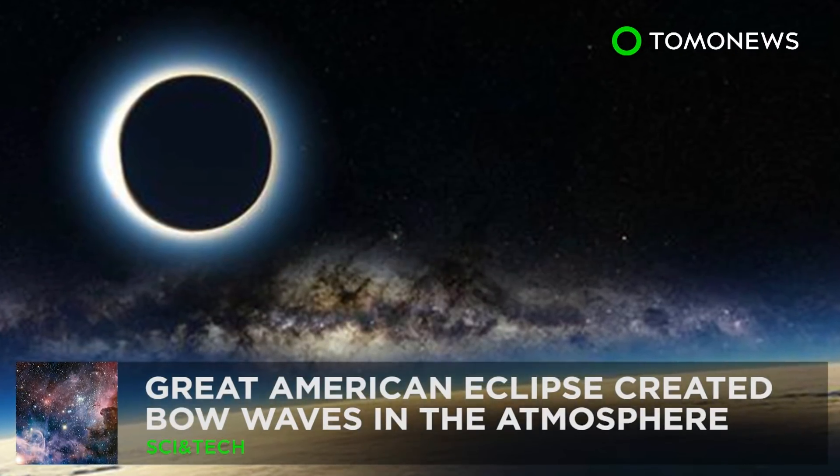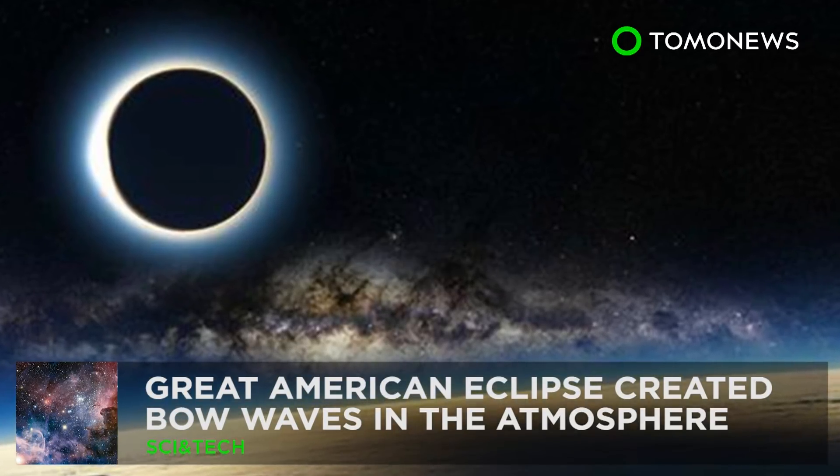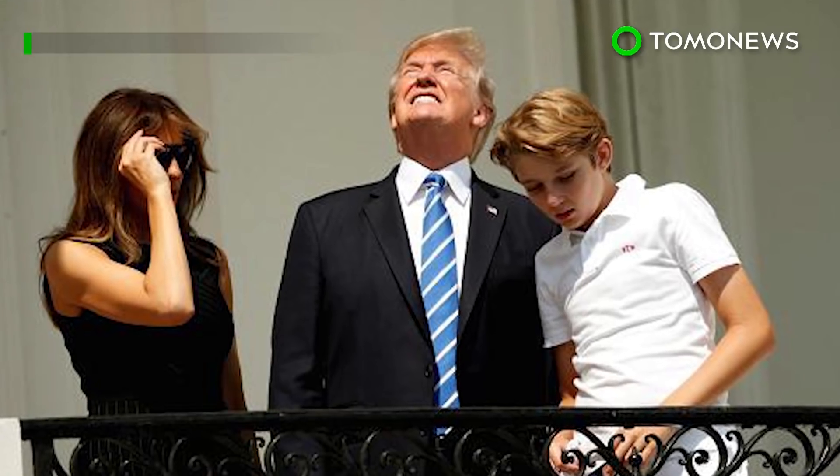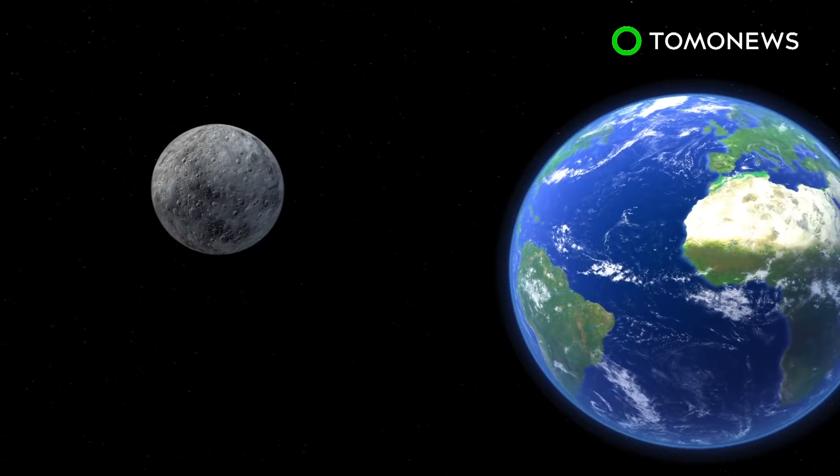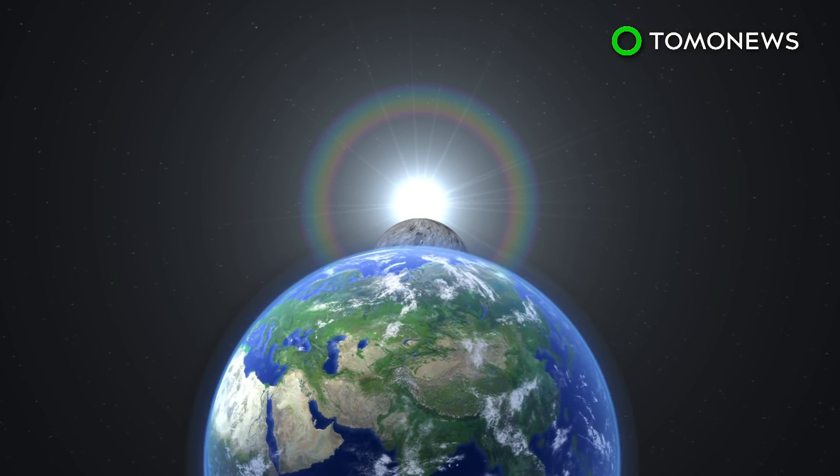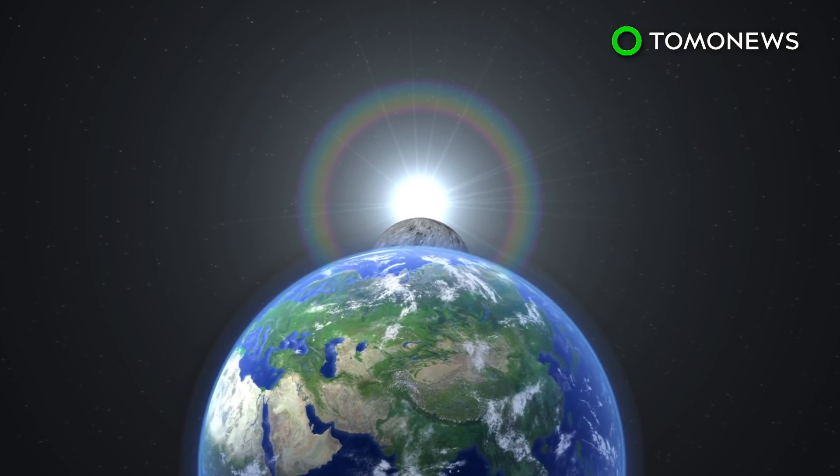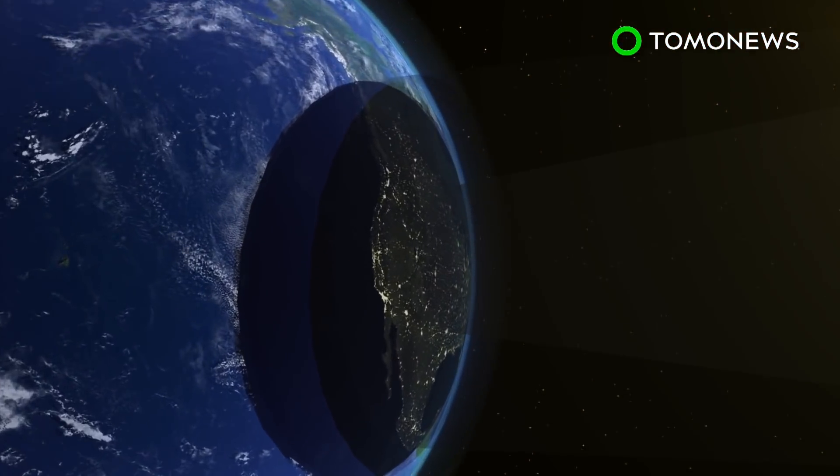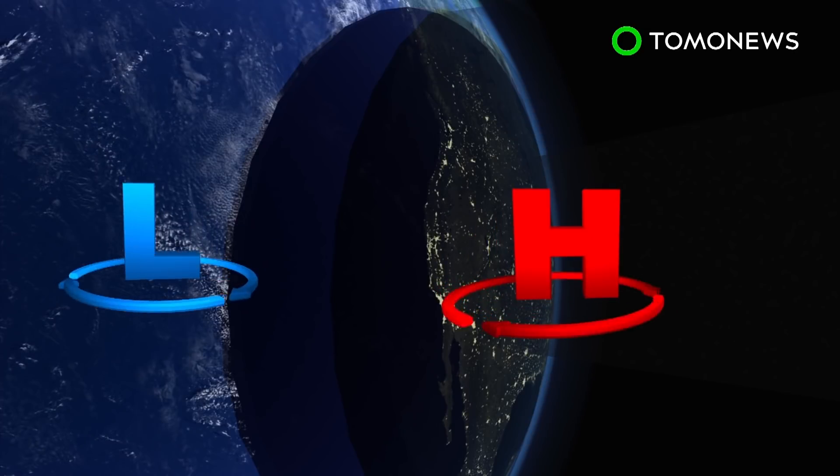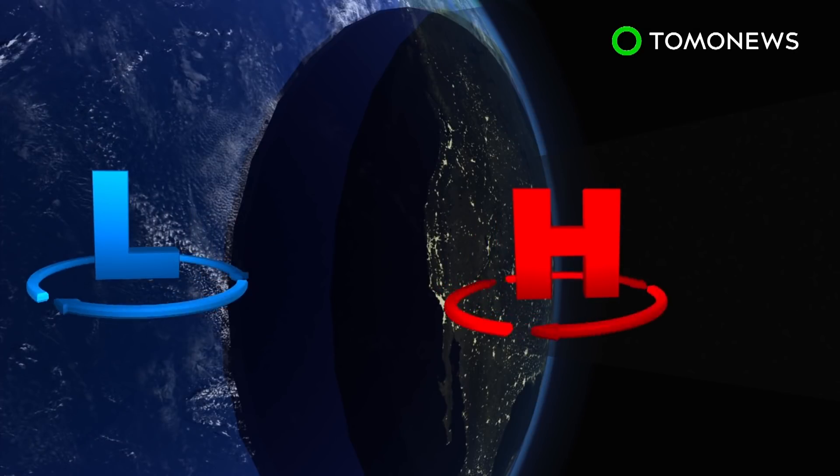Great American Eclipse created bow waves in the atmosphere. Don't look at it, unless you're the president. The total solar eclipse in August of 2017 left bow waves in the Earth's upper atmosphere like a boat sailing through water. The bow wave theory says that a total solar eclipse will create high-pressure pockets under the moon's shadow that slides through low-pressure air as the shadow moves across Earth. These air pockets then generate small bow waves in the atmosphere.